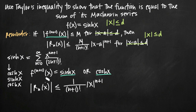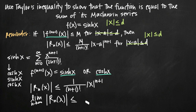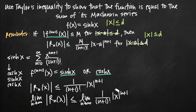To prove this inequality leads to the result we want, we use a squeeze theorem application: we take the limit as n goes to infinity of both sides. The limit as n→∞ of |R sub n of x| is less than or equal to the limit as n→∞ of (1 / (n+1)!) · |x|^(n+1). Looking at the right-hand side, this limit equals 0 — we just need to look at the coefficient 1/(n+1)! to see that.